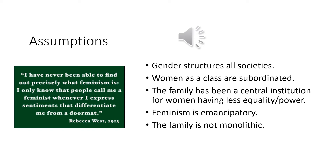The next two assumptions are that women are subordinated and the family is an institution for perpetuating that. Feminist theory assumes that women have had less power historically and that families, while wonderful, often perpetuate this. For example, in a heterosexual family where the husband works full-time and the wife works part-time caring for children, if that couple divorces, the man's income continues to rise while the woman's declines because we don't place a premium value on care work.